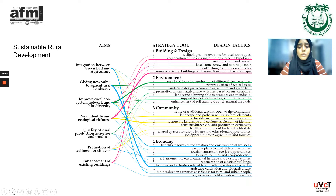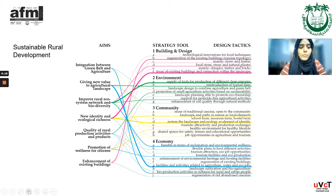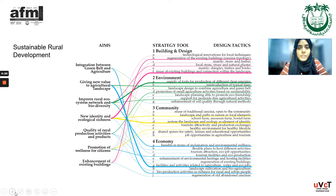Further objectives include improving the quality of rural production activities and products, promoting the wellness of citizens of the rural community, and enhancing existing built structures. Another approach could be to promote a smart, mixed-use community development in a way that would discourage the urban sprawl situation we currently face. Several key questions need to be asked before moving forward.